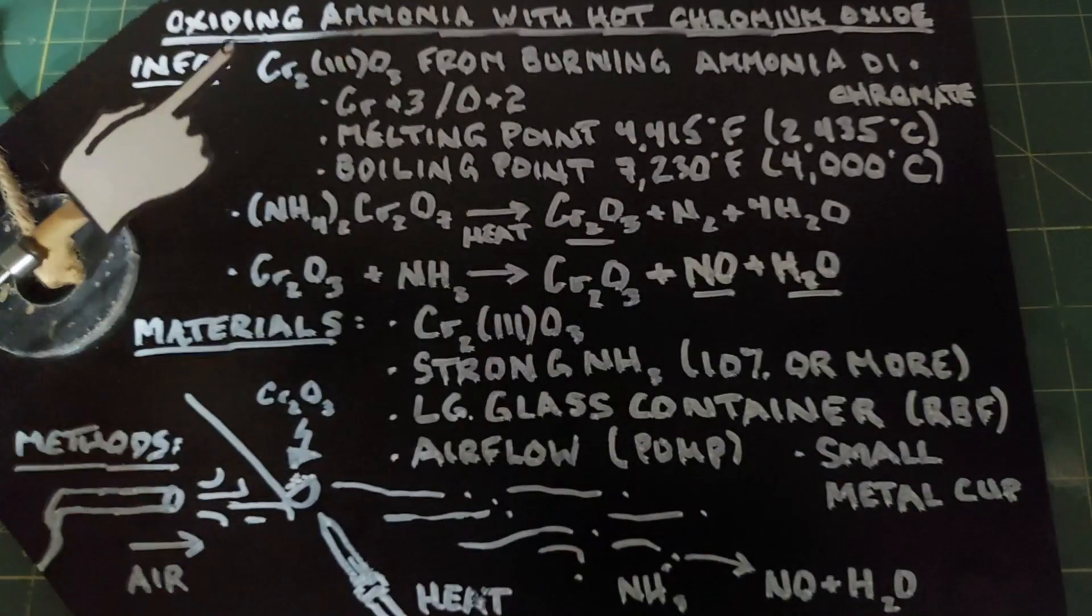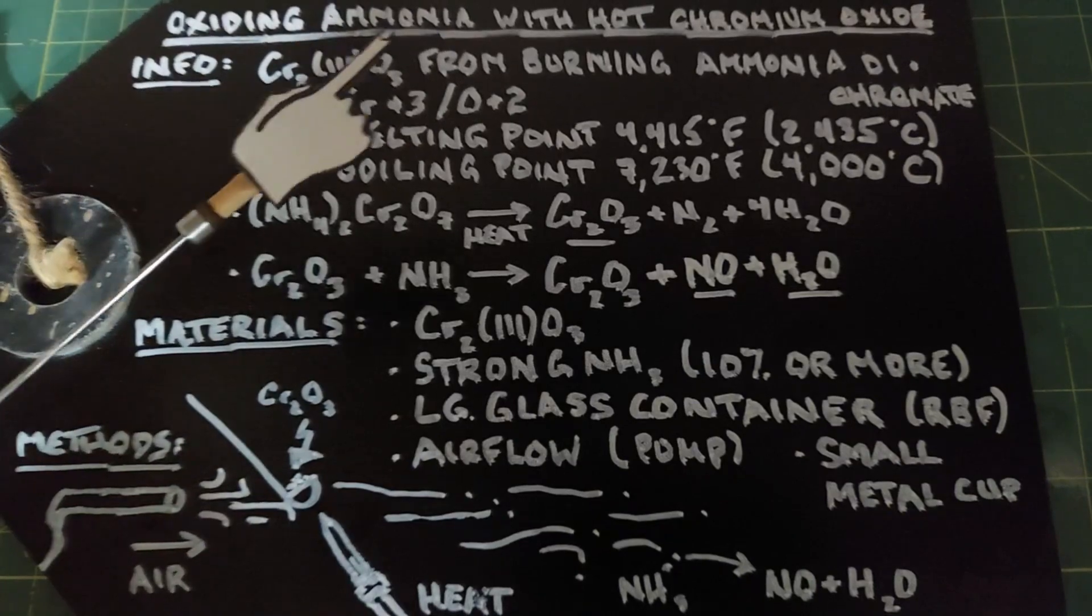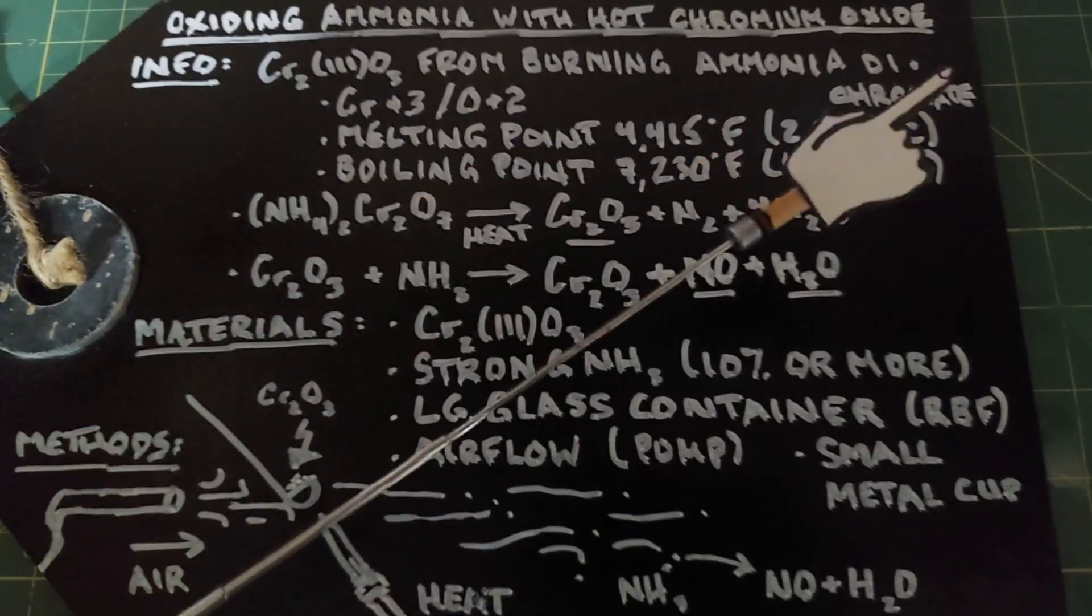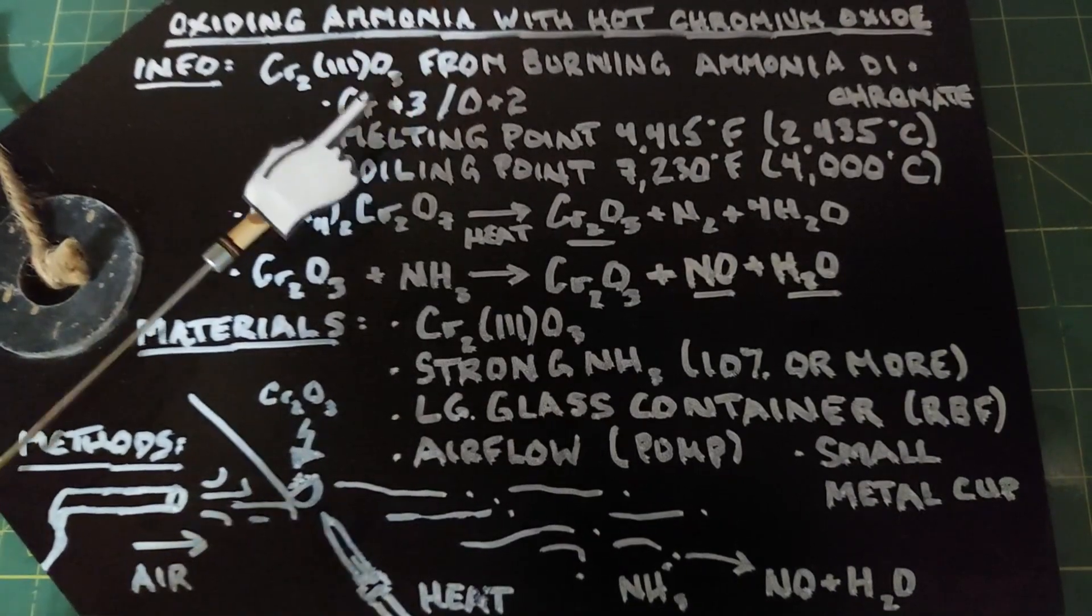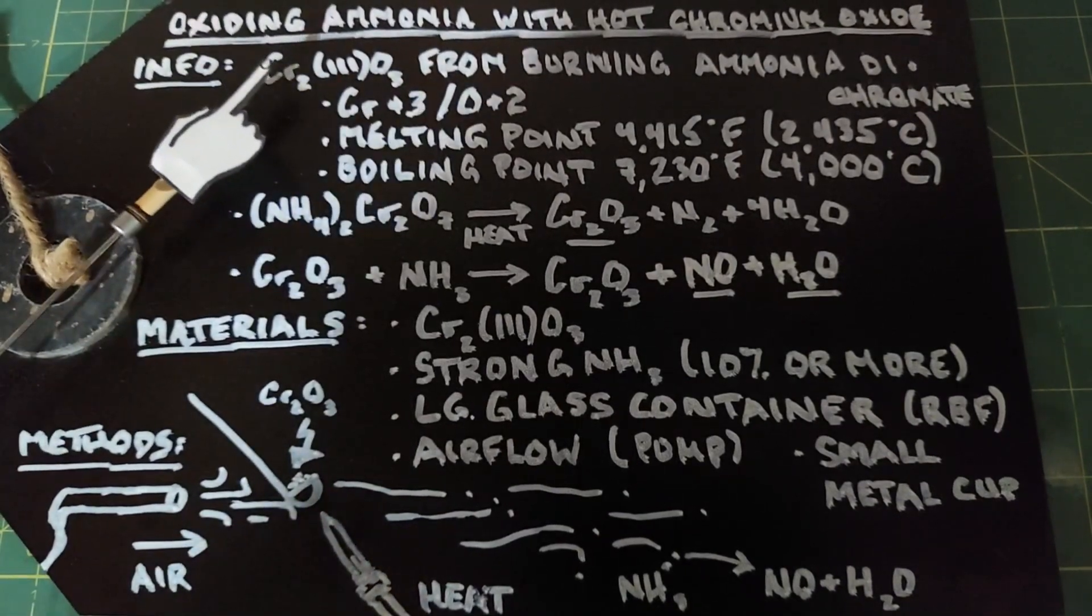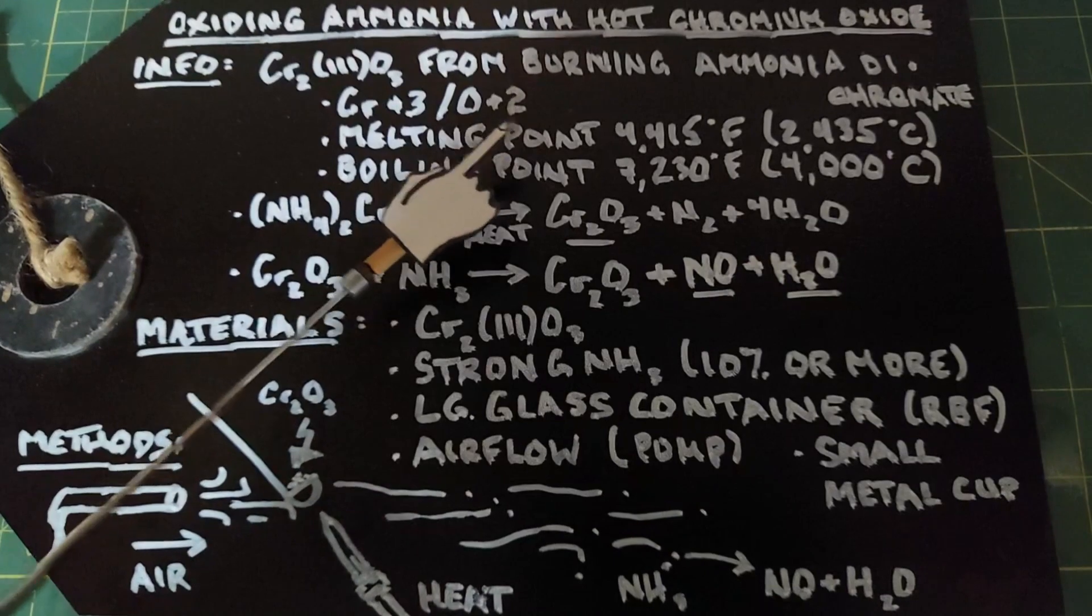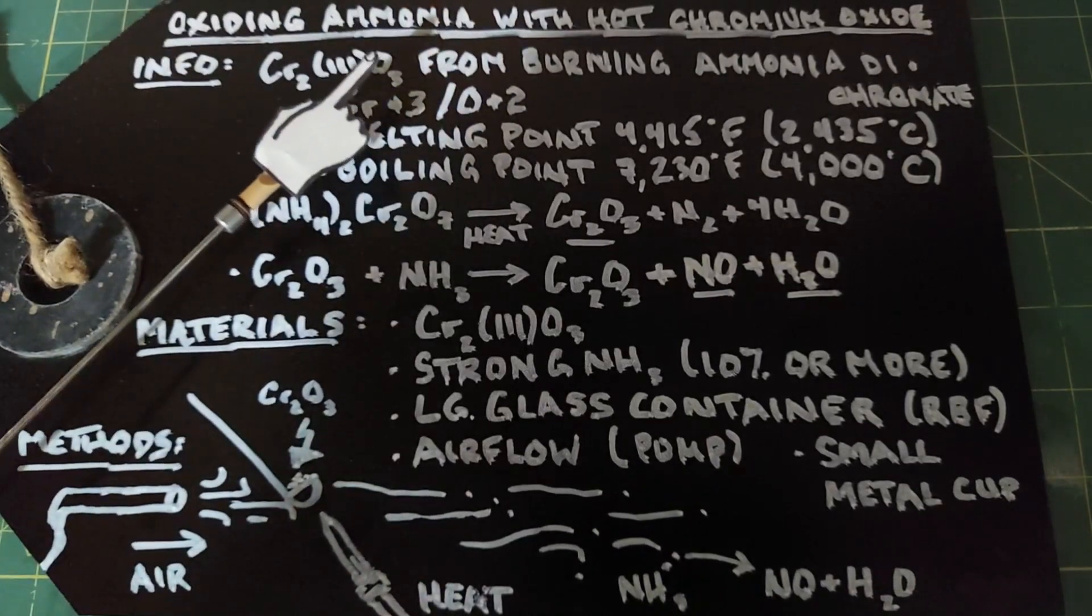This video is going to look at a pretty cool reaction: oxidizing ammonia with hot chromium oxide. The chromium oxide is chromium(III) oxide. The chromium is in a +3 oxidation state and the oxygen is in a -2 oxidation state.